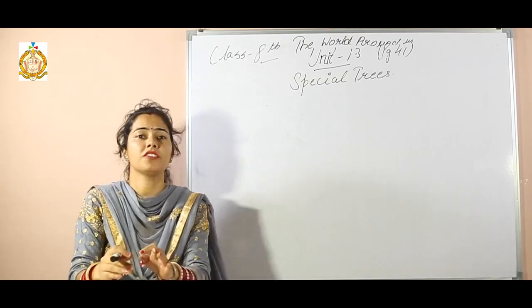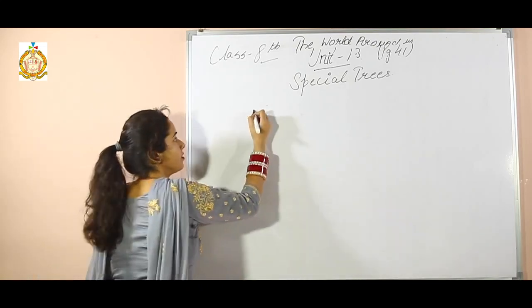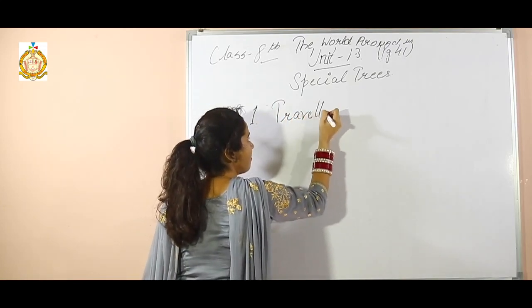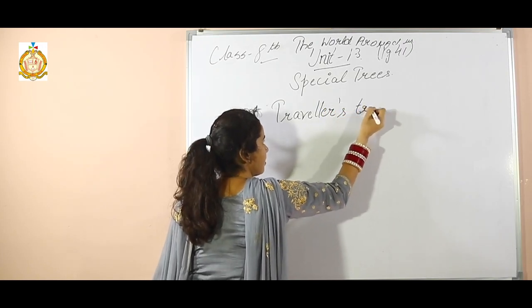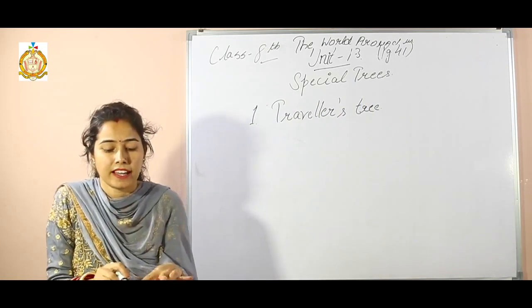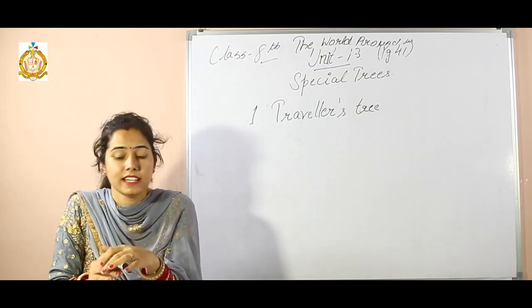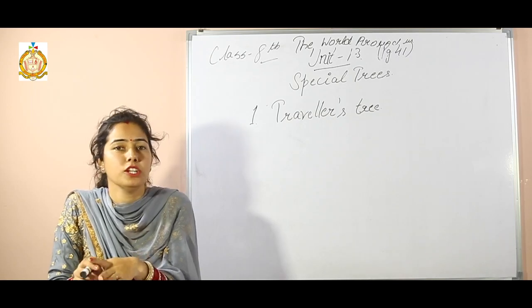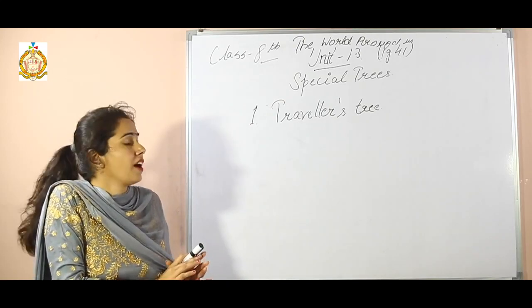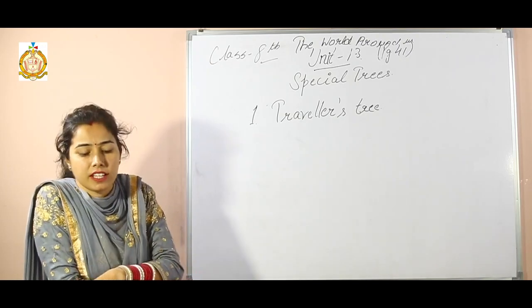In this chapter, different trees are given that have special characters. The first tree is traveler's tree. This tree accumulates water in its leaf bases and has been used in emergencies for drinking. Its trunk resembles that of a palm tree. The picture is also given in your book.